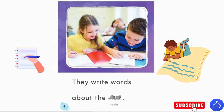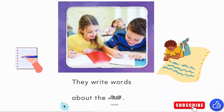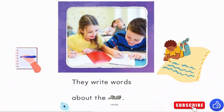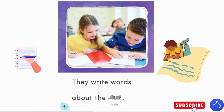They write words about the rocks. Green rocks, brown rocks, big rocks, small rocks, grey rocks, brown rocks — there's so many words to describe rocks. Can you think of some words to describe rocks? Maybe you have rocks that are really tiny or really large, or colorful, very shiny rocks.